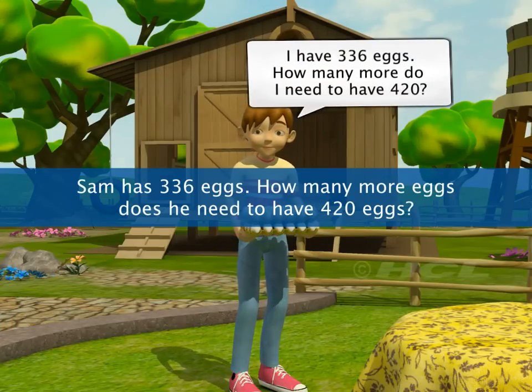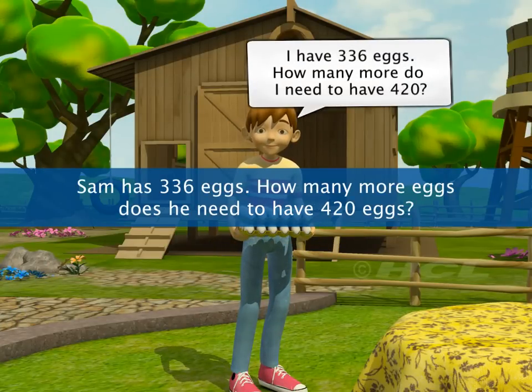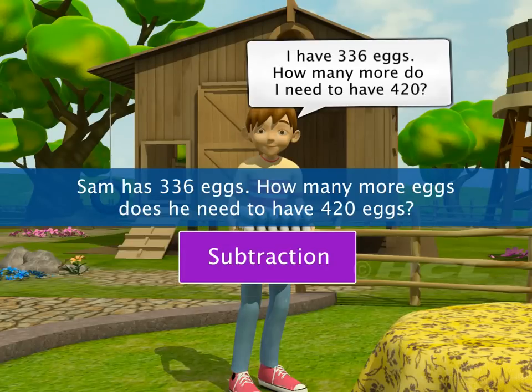Sam has 336 eggs. How many more eggs does he need to have 420 eggs? What do you think you need to do to find the answer? Subtraction is correct.